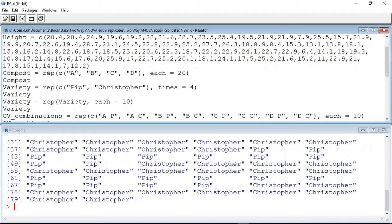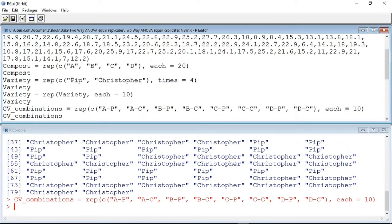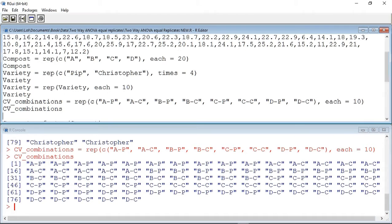Finally, to test the homogeneity of the variances, we need to produce a variable that contains all the various combinations of compost and variety. Here, you can see I've defined a string that contains AP for compost A and Pip, AC for compost A and C, BP for compost B and Pip, etc. Each of these combinations appears 10 times. So, I'm going to run the command, and we get a variable that looks like this.